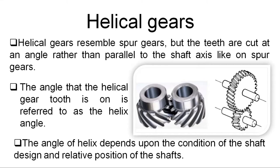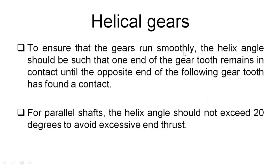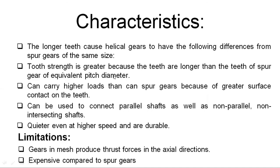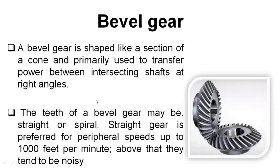To eliminate the end thrust or axial thrust in helical gears, double helical gears are used — two opposite helical gears placed in position. This ensures the gears run smoothly; the helix angle should be such that one end of the gear tooth remains in contact until the next engages. Since the teeth are inclined to the gear axis, it is a little bit expensive to manufacture helical gears compared with spur gears.